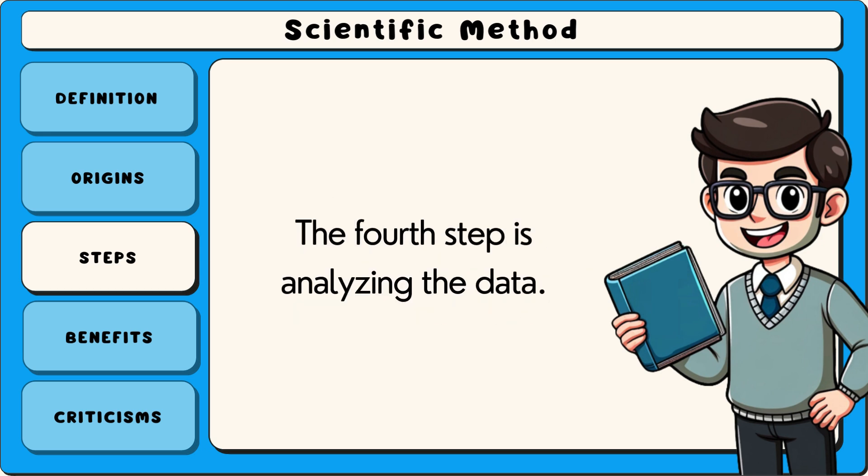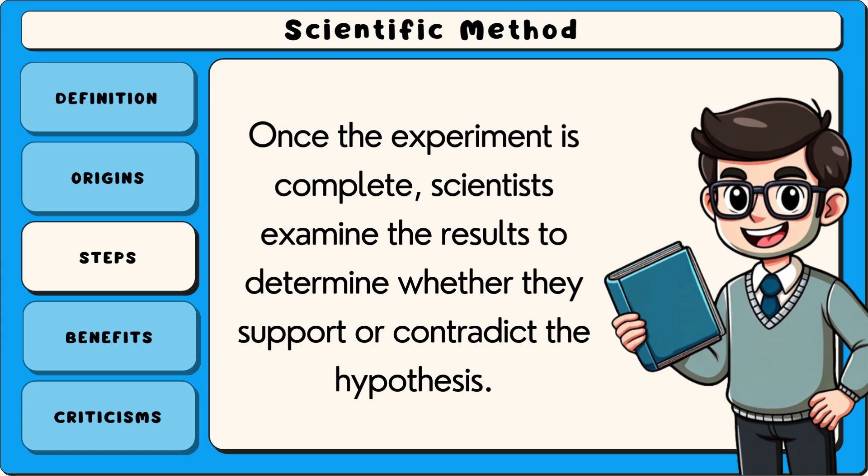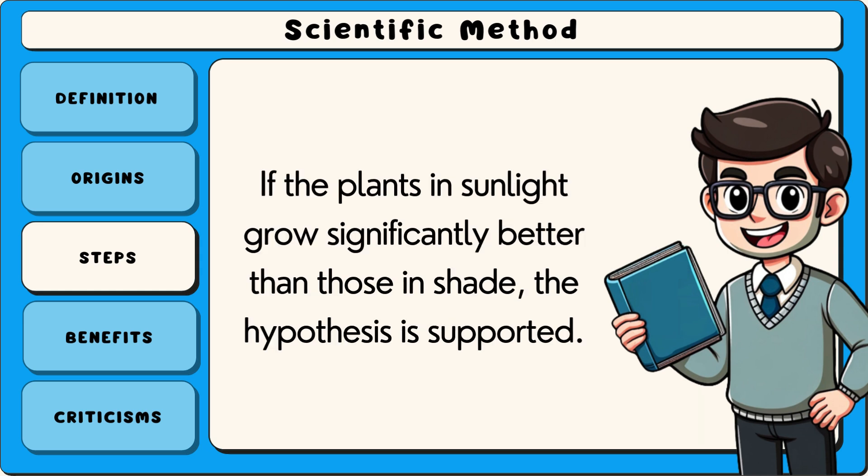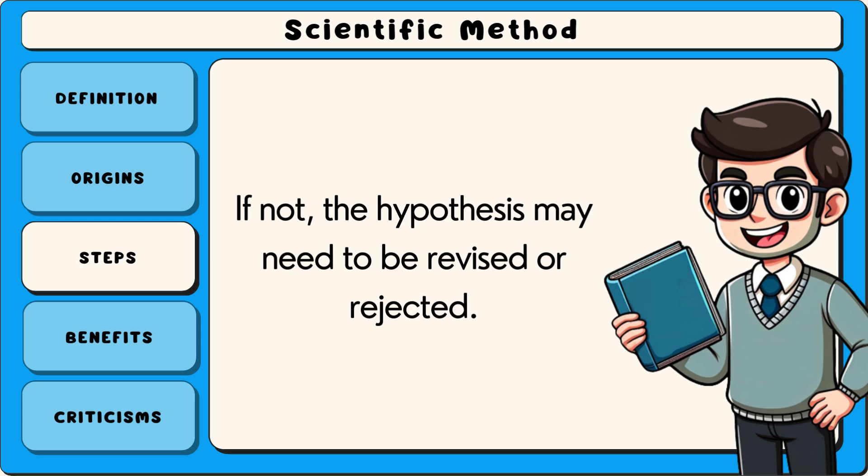The fourth step is analyzing the data. Once the experiment is complete, scientists examine the results to determine whether they support or contradict the hypothesis. If the plants in sunlight grow significantly better than those in shade, the hypothesis is supported. If not, the hypothesis may need to be revised or rejected.